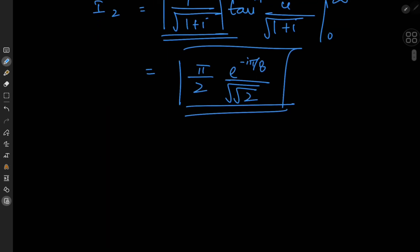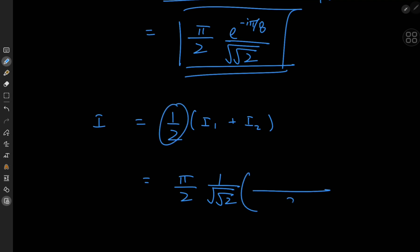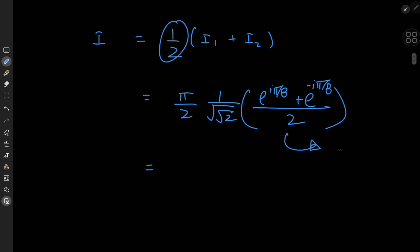Now we just have to combine everything. Our target integral I was one-half times the sum of I₁ and I₂. Factoring out the common factor of π/2 times 1/⁴√2 and the one-half, we're left with e^(iπ/8) plus e^(−iπ/8). That's what we call the cosine of π/8 — well, twice the cosine — written in the complex realm using Euler's formula. Trigonometric definitions are just insanely cool when written in terms of complex analysis.